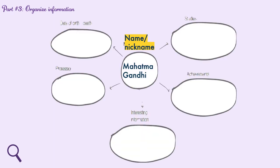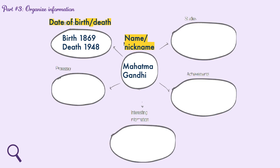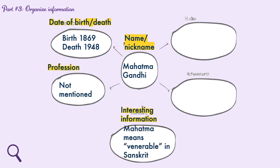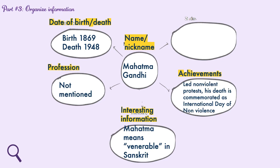Now let's look at the same mind map completed with all the information from the text. The name or nickname is Mahatma Gandhi. Date of birth: 1869; death: 1948. Profession is not mentioned. Interesting information: 'Mahatma' means venerable in Sanskrit. Achievements: he led non-violent protests and his death is commemorated as International Day of Non-Violence. Studies are not mentioned.